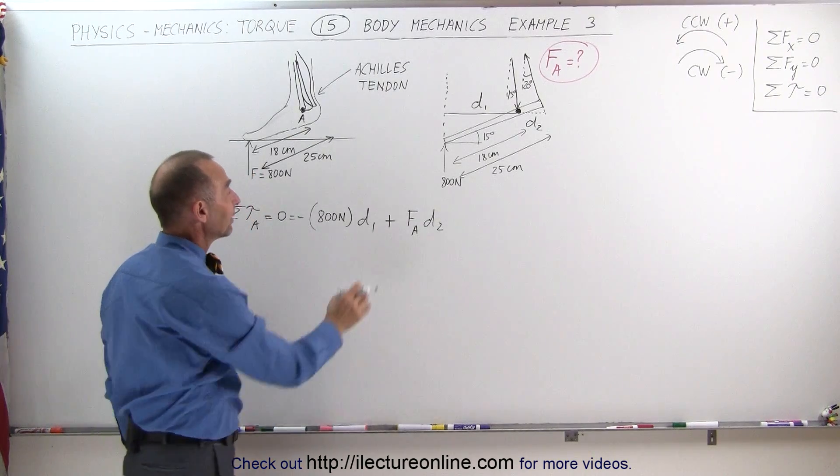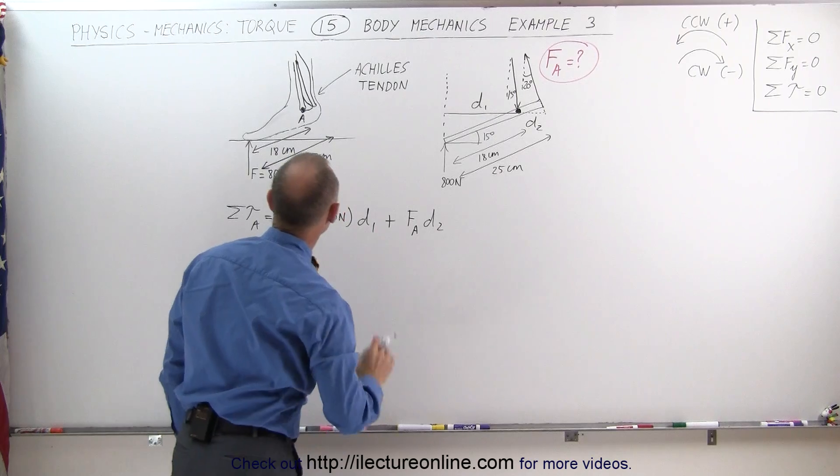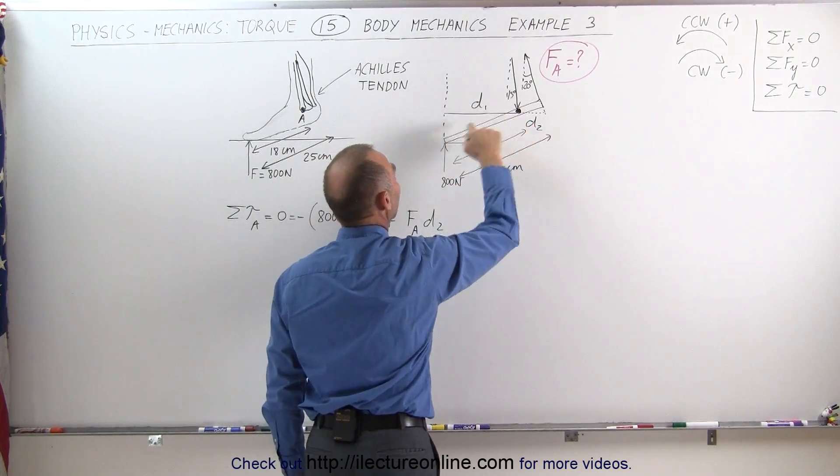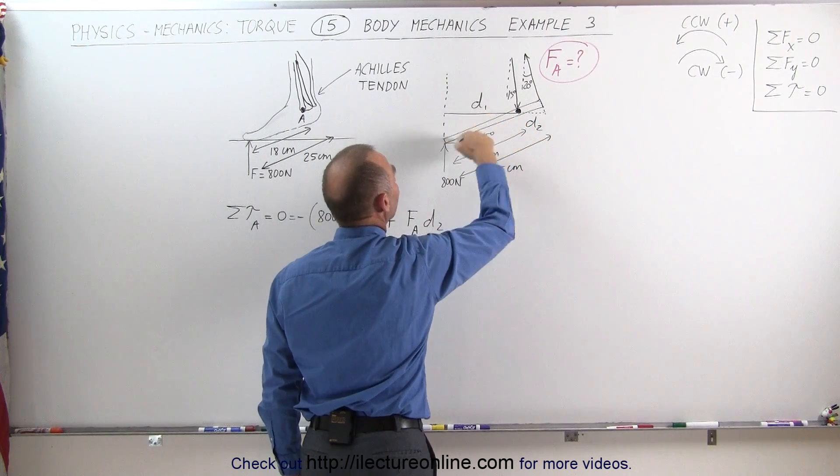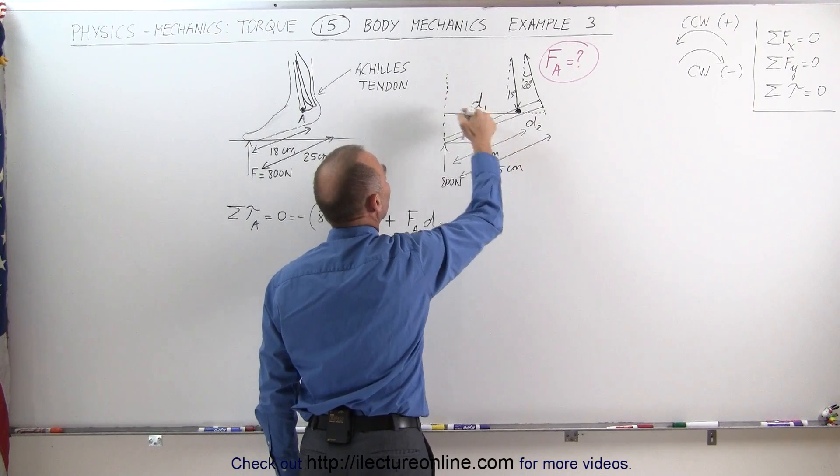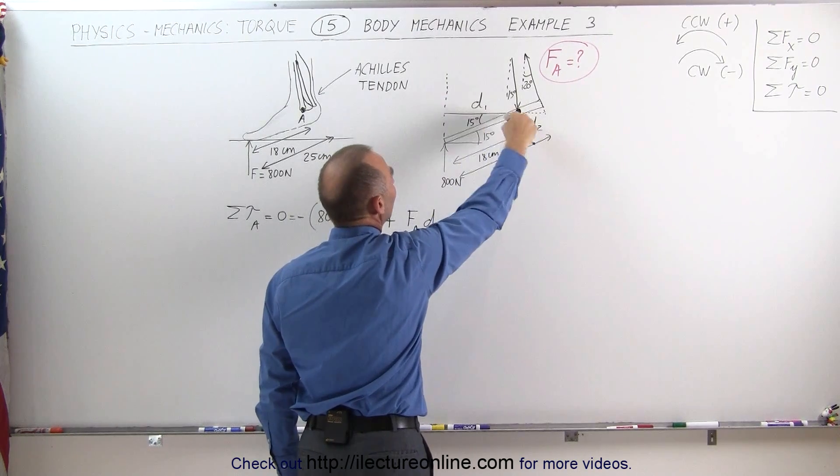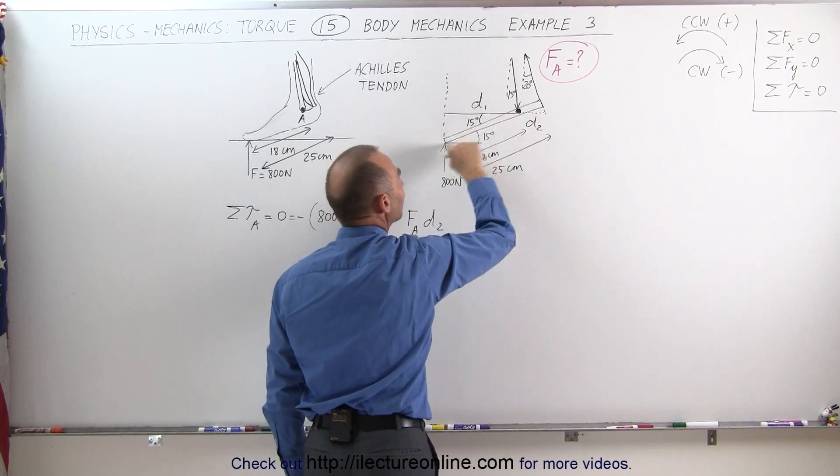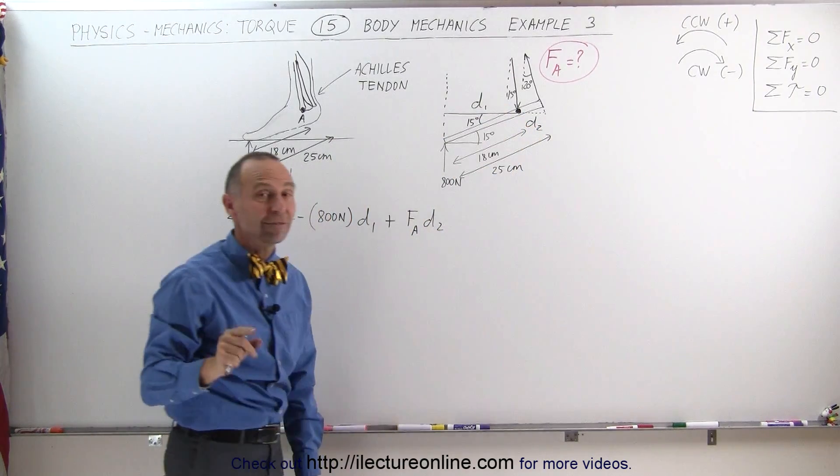Right now we need to find distance one and distance two. Distance one is probably a little bit easier. Notice that this from there to there is 18 centimeters, we know that this angle is 15 degrees which means that this angle is 15 degrees as well and distance one here is adjacent to this angle so therefore to find distance one it would be the length 18 centimeters times the cosine of 15 degrees.